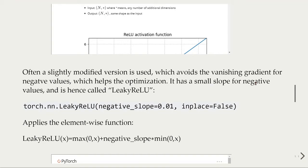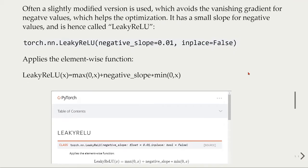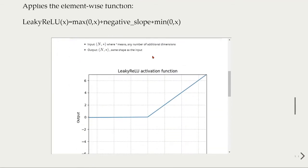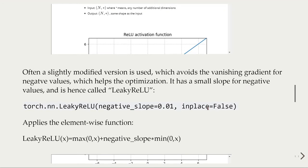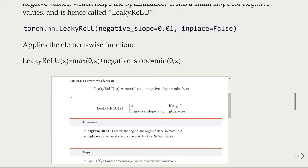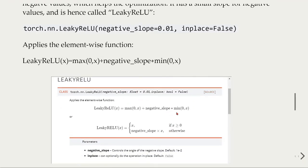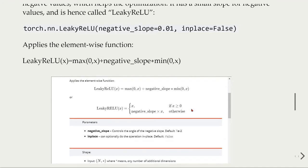Often, a slightly modified version is used which avoids the vanishing gradient for negative values, which helps the optimization. In this modified version, it has a small slope for negative values and is called the leaky ReLU. We can also take a look at the PyTorch documentation of the leaky ReLU, and we see that there is a small slope here, and we can set these values. This negative slope is a float that by default is 0.01. We can change this, and this leaky ReLU will apply this function here.